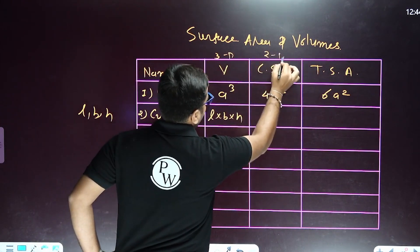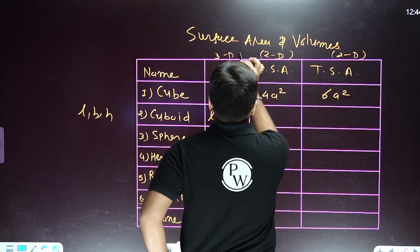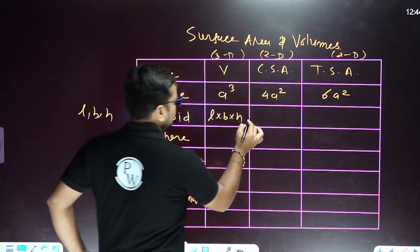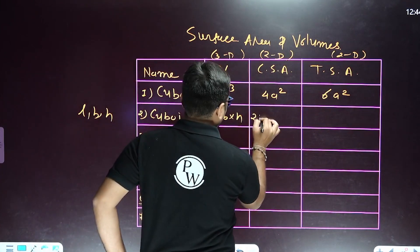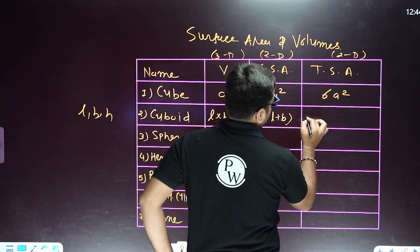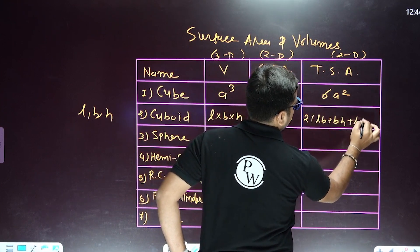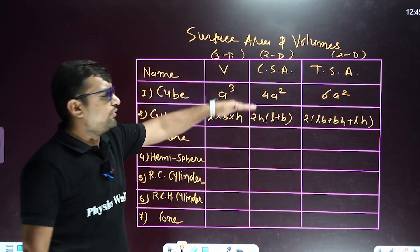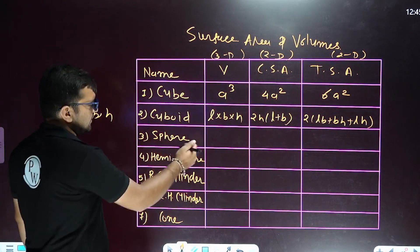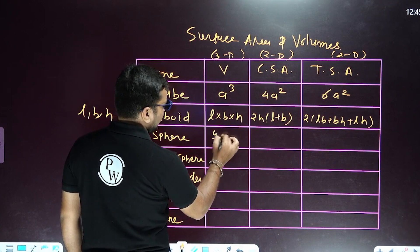For the cuboid, take length l, breadth b, and height h. Volume is l times b times h — a three-dimensional measure, so be careful about units in the exam. The curved surface area is 2h times (l plus b), and the total surface area is 2(lb plus bh plus lh).